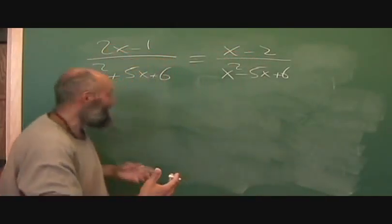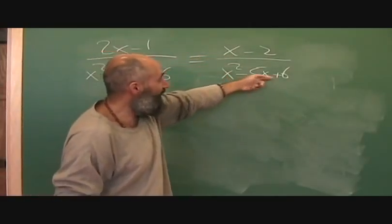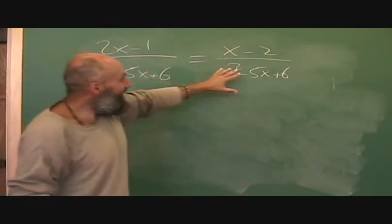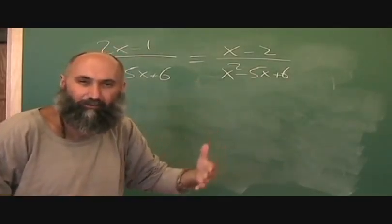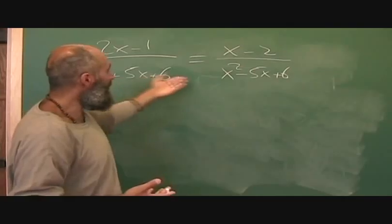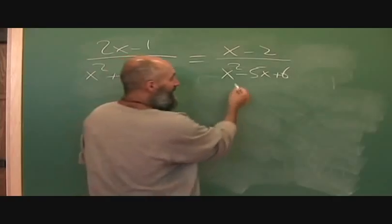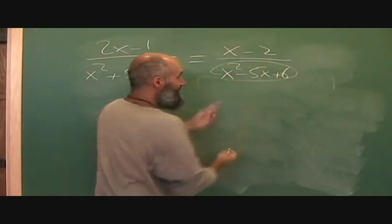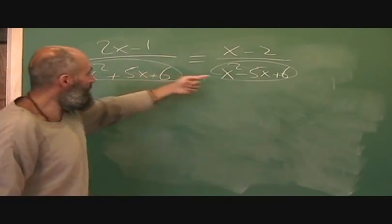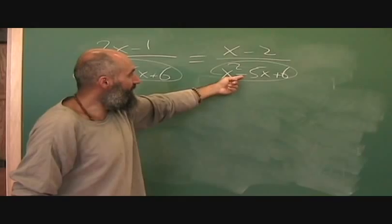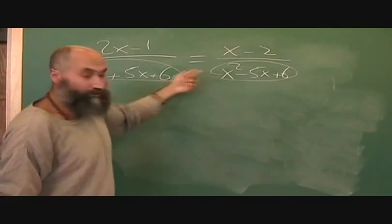So here's a harder problem. We've got 2x minus 1 over x squared plus 5x plus 6, equals x minus 2 over x squared minus 5x plus 6. Even with something more complicated like this, it's one more level — we've gone into quadratic equations now. The way you solve this: you find the restrictions. You take each denominator and say it can't equal zero. These two look similar but there's a difference — one has a negative sign and one has a positive, so the solutions will be different.